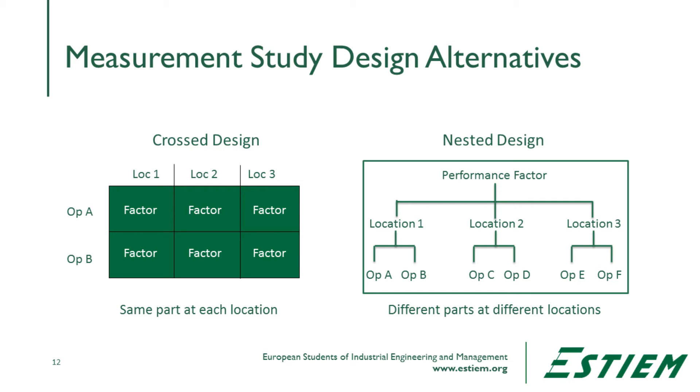The second type is called a nested design. A nested design is used when you can't do a full crossed design — for example, with different factories A, B, and C that each have their own measurement equipment and production lines. You can't use the same parts or operators across all factories, but within each factory you could have a crossed design. You can then compare factory outputs for a standardized part, standardizing on material, supplier, or lot code. That comparison across factories is the nested design, which is more difficult to analyze than the crossed design.